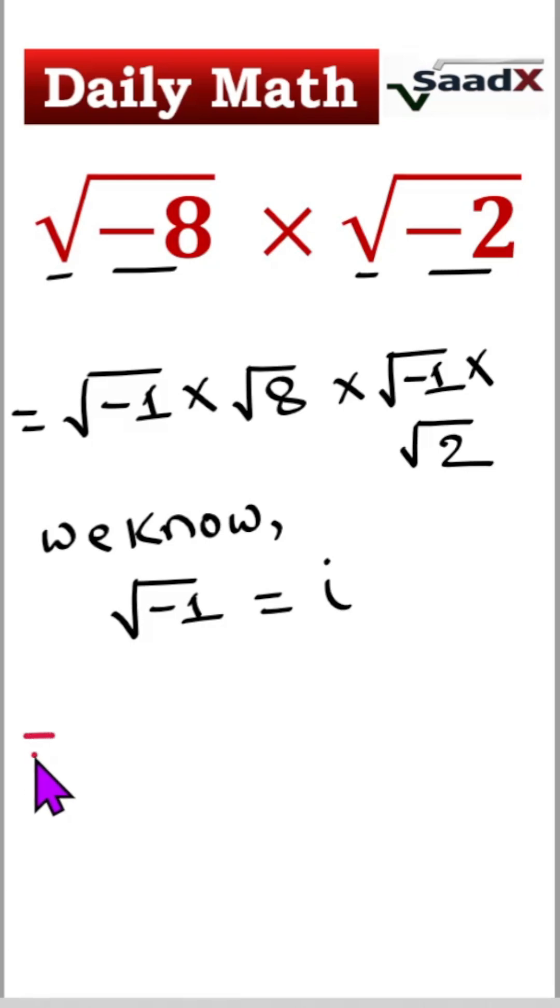It means we can write i times another i times square root of 8 times square root of 2, it will be square root of 16, okay.